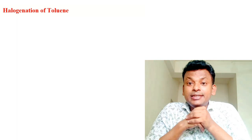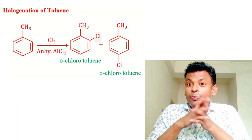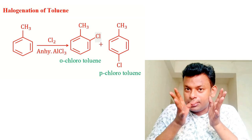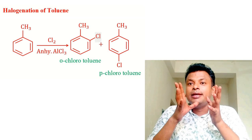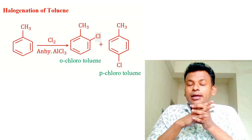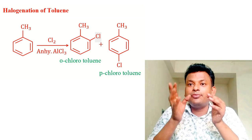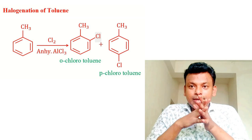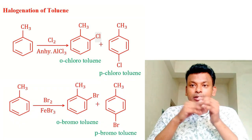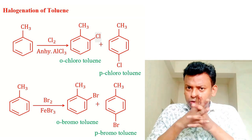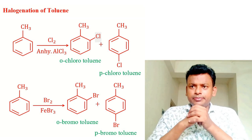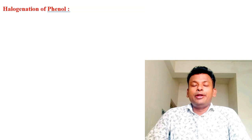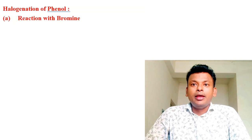Halogenation of toluene: CH₃ has a +I effect, so it forms ortho and para products. In the presence of Cl₂ and anhydrous AlCl₃, ortho-chlorotoluene and para-chlorotoluene are formed. With Br₂ and FeBr₃, ortho-bromotoluene and para-bromotoluene are formed. Para product is the major product.